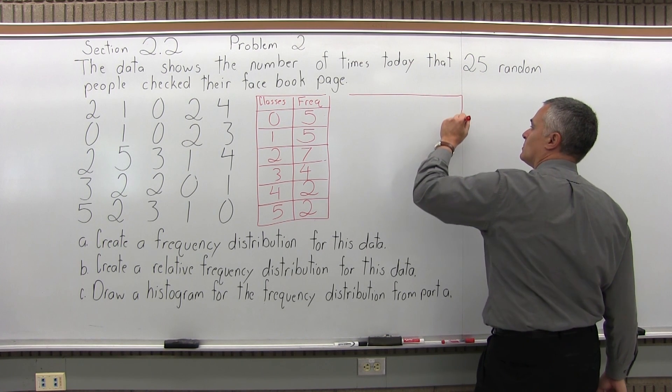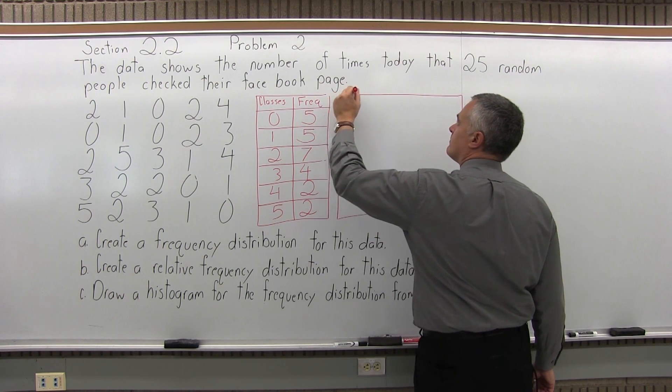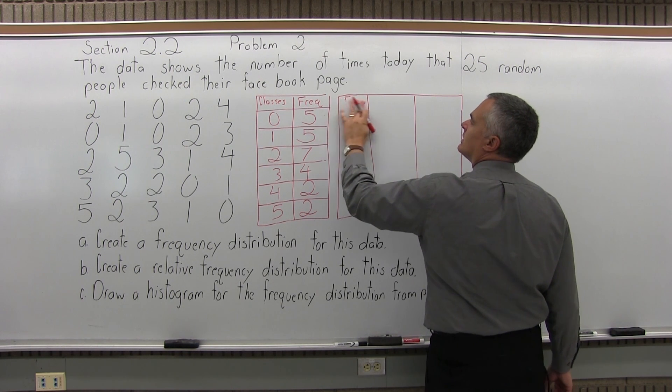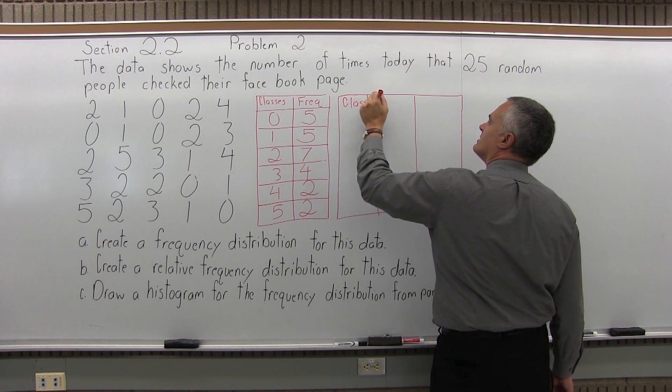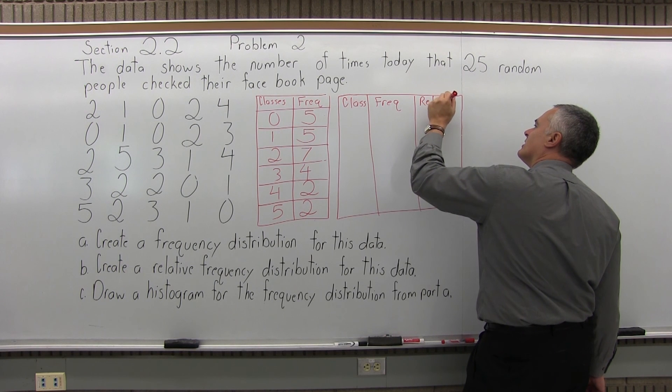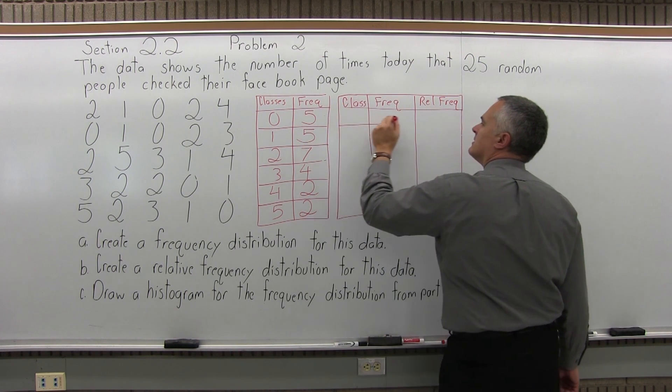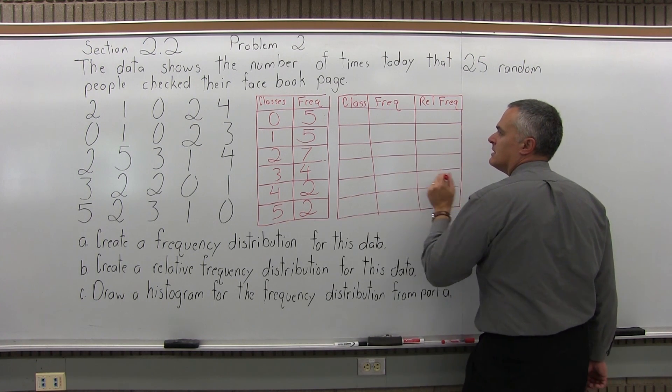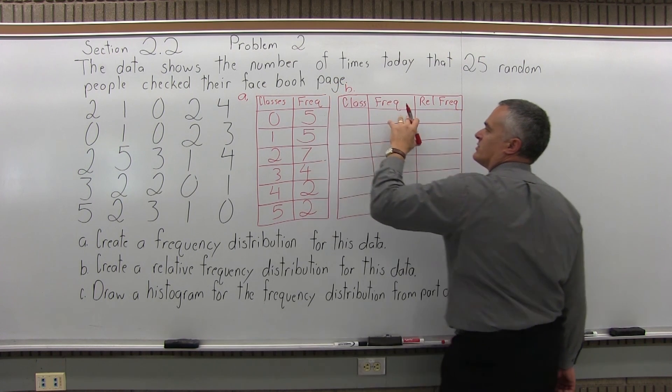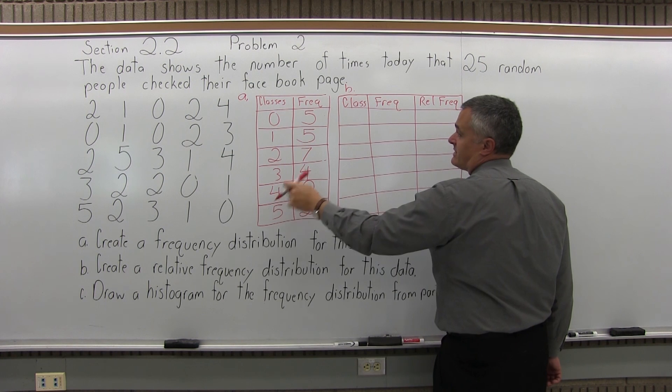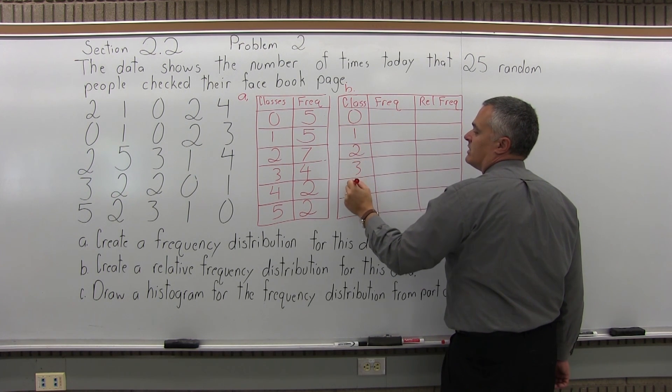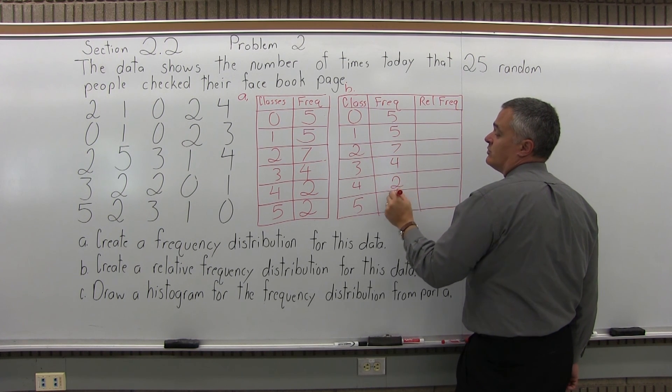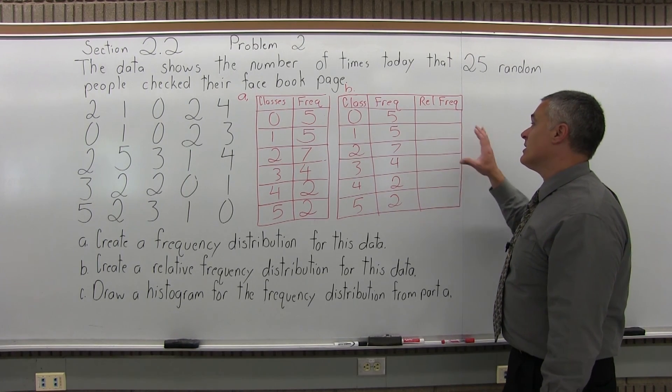Class first, then frequency, and then relative frequency. And again, I abbreviate it a little bit just to make it fit in the columns. And again, the first one was the answer of part A, and this one I'm working on next to it is the answer of part B. The first column will be exactly the same, zero through five. Zero, one, two, three, four, five. The frequencies will still be the same. Five, five, seven, four, two, two. So so far it's really exactly the same. Here's where the extra part comes in.